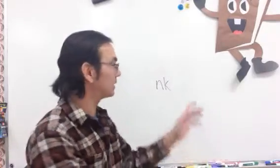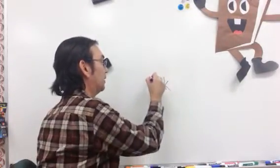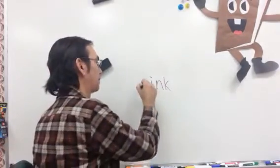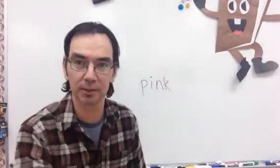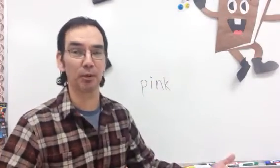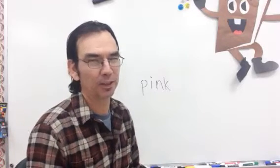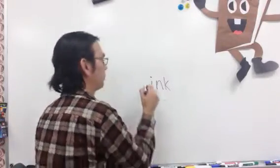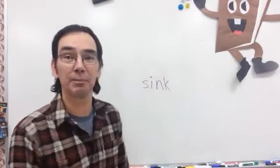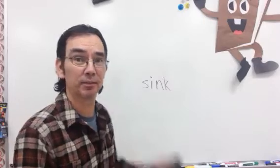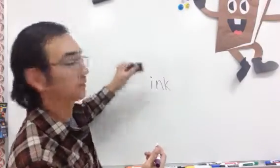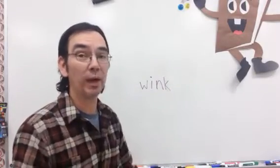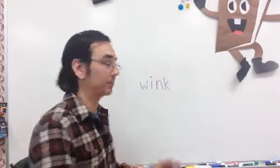Now this is N-K. If we add an I in front of it, it becomes 'ink.' Now watch what happens here — if I add a P in front of that, it becomes 'pink.' Another word just like that! Take away that P, add an S — it becomes 'sink.' Take away the S, add a W — it becomes 'wink.' Look at all that!